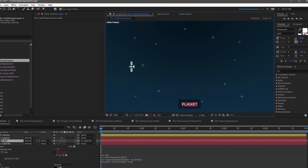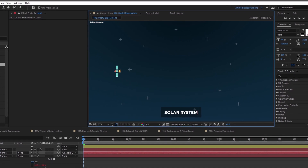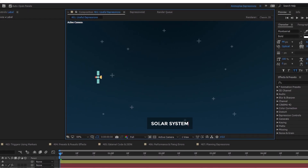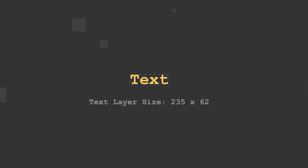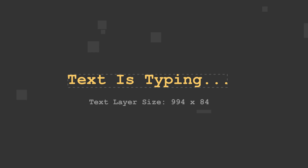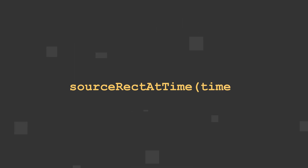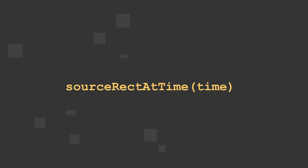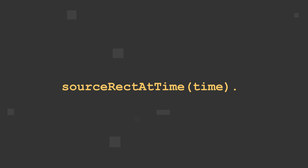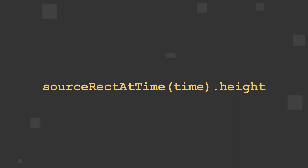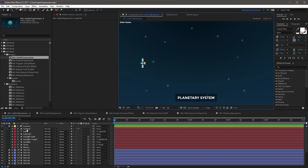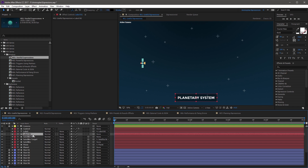A handy method when working with graphics and templates is the sourceRectAtTime expression. This method is great for adding a dynamically sized shape layer behind an editable text layer. It measures a layer's bounding box dimensions on the X and Y and then outputs the results. It starts with the method name sourceRectAtTime — capital R, A, and T — followed by an open parenthesis and one argument which is the evaluated time, ending with a closed parenthesis. Immediately after the method is a period operator and then one of two attributes: width or height. In this composition, you'll see a label layer and a label background layer, and you can use sourceRectAtTime to link the size of the background layer to the text layer.